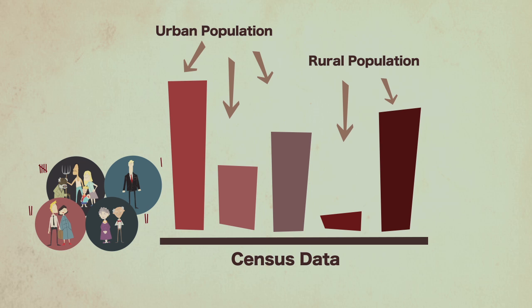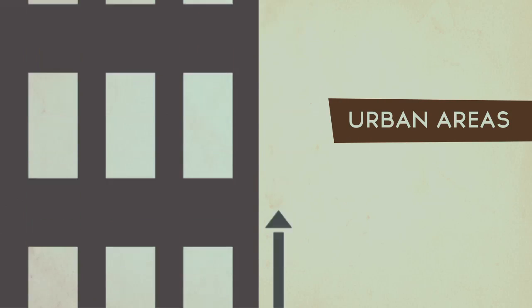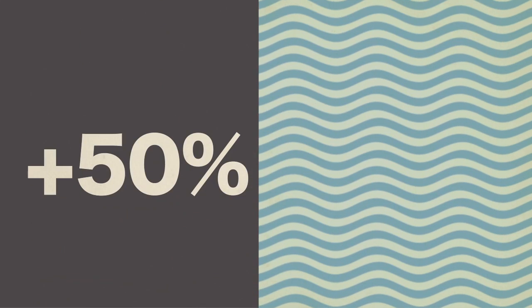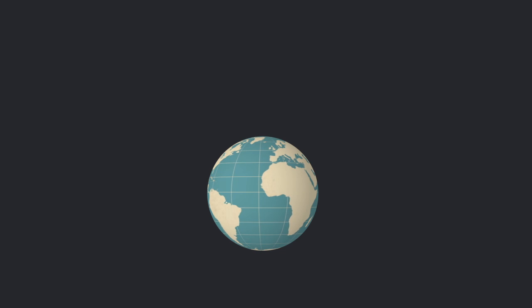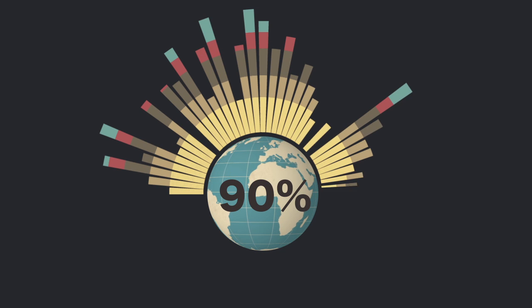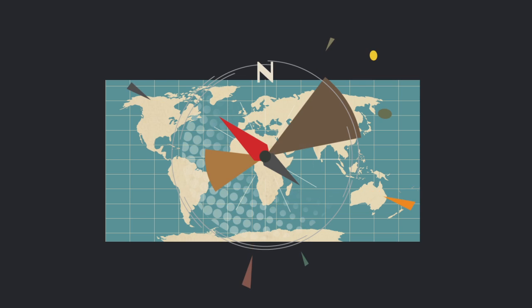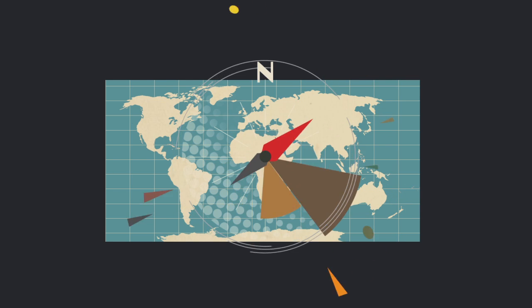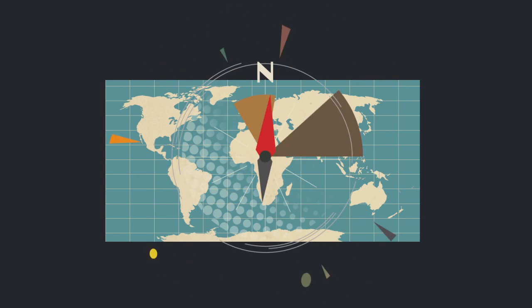we know that most people live in urban areas, and more than half of the world's population lives near the ocean. About 90% of the Earth's people live on 10% of the land, and about 90% live north of the equator.